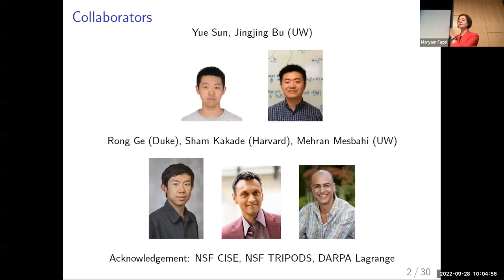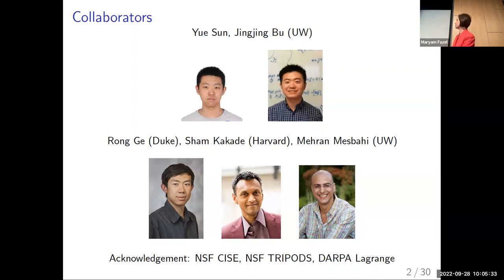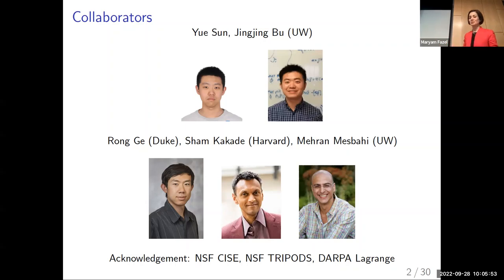First, I acknowledge the collaborators who are part of the main work I will present. The project has grown since and we have even more collaborators, but mainly this is joint work with my student who graduated recently and is now working at Microsoft, and Jingjing Wu, also a student at University of Washington who has also graduated and is working at a startup. Also collaborators from Duke University, someone who used to be at UW but is currently at Harvard, and Mehran Meswahi at UW in the aeronautics department. The group spans CS, RL, statistics, control theory, and optimization.